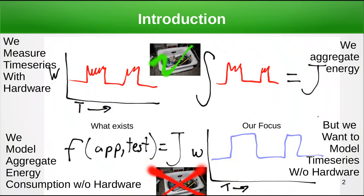What's the point of this study? Essentially, in software energy research, people measure time series of power use over time with hardware. I like to use the Green Miner — it uses a chip that does current sensing and measures energy consumption as we run a test. Typically, to get the actual energy consumed, we aggregate that power measurement over time. What is often done in literature is we model that — we produce a function that given an app and a test will produce joules. We essentially try to model aggregate energy consumption without hardware, because hardware is kind of expensive.